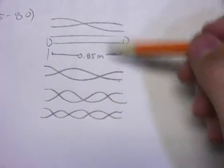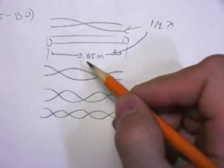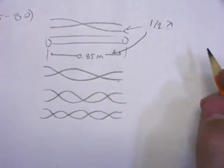So, but we want this guy. So this one right here is half a wavelength. So we multiply that by two.